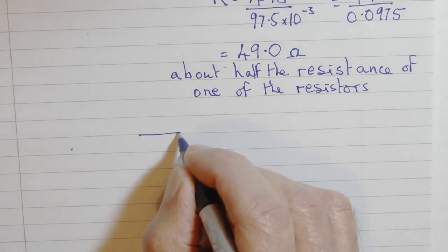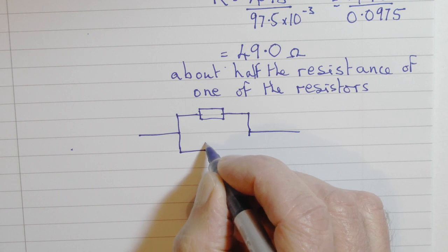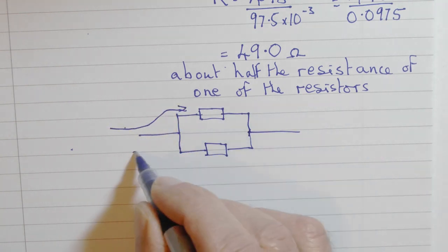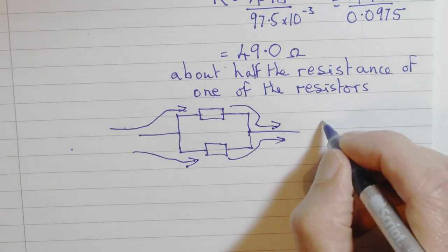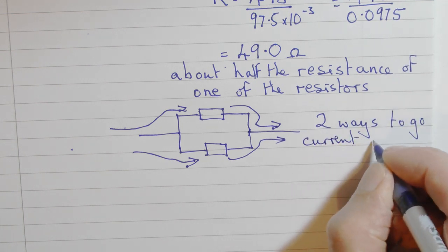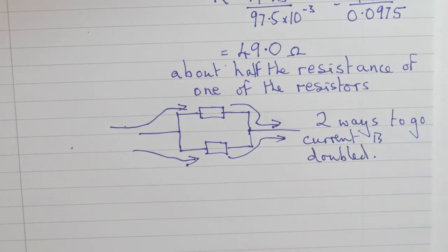Now, does that seem sensible? Well, I think so. Remember, the current has got two ways to go around. So twice the amount of current would flow. And that would lead to half the resistance since the current is doubled.